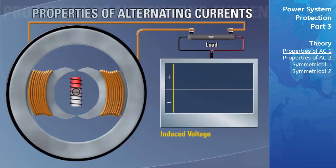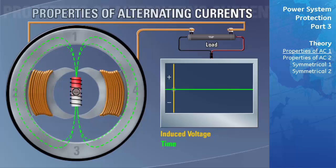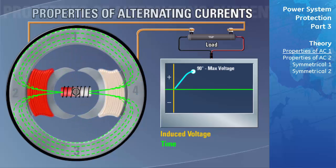Let's plot a graph of the voltage induced in the stator windings on the y-axis against time on the x-axis as the exciter rotates through one revolution. As the exciter rotates counterclockwise from position one to position two, the stator poles offer a lower resistance path for the exciter flux. As the exciter moves closer to the stator poles, more lines of flux flow through the lower resistance path, inducing a higher voltage and current in the stator.